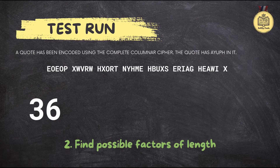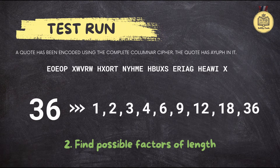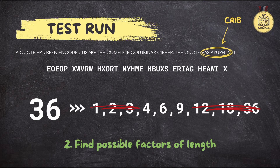Now step two: find all the numbers that divide evenly into 36. So we've got 1, 2, 3, 4, 6, 9, 12, 18, and 36. But there's a twist — the Science Olympiad rules say the number of columns in a columnar cipher has to be between 4 and 9, so anything less than 4 or greater than 9 is out. And here's another shortcut: the length of the crib gives you a clue. The rules say the crib can be at most one letter shorter than the number of columns. So if your crib is 5 letters long, you can ignore any factors greater than 6, because the max number of columns would be 6. That leaves us only 4 and 6 to try.